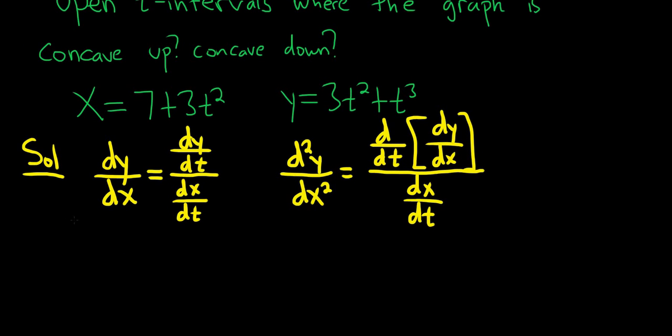Let's work out dy/dt and dx/dt separately. Let me switch colors here. So dy/dt is the derivative of y with respect to t, so that's just the power rule. It'll be 6t, so 6t + 3t². That's going to be dy/dt. And then dx/dt will just be 6t, just 6t, because the derivative of 7 is 0, and here we just get 6t.